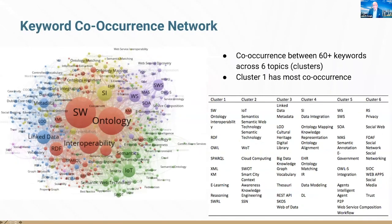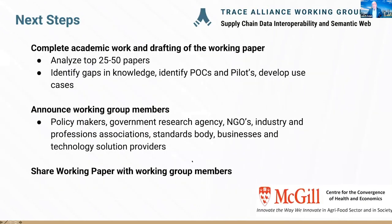These are some of the keywords and clusters we've identified — co-occurrences of keywords across different papers. These graphs and charts are very valuable for academics to mine key areas and extract more knowledge. The next steps for the group: we're going to complete the academic work and drafting of a working paper, analyzing the top 20 to 50 papers, identify gaps in knowledge, identify potential proof of concepts and pilots, and develop some use cases.